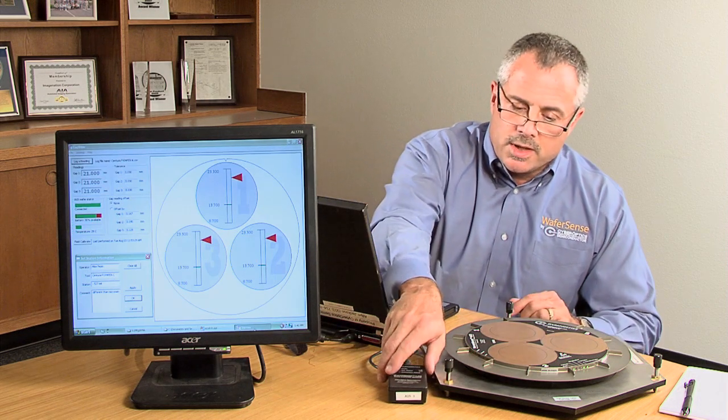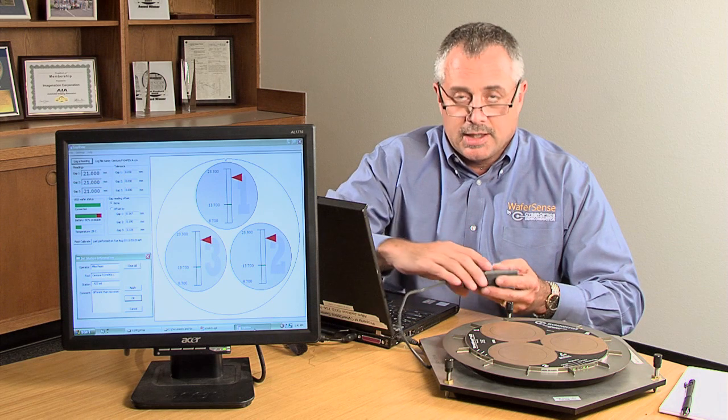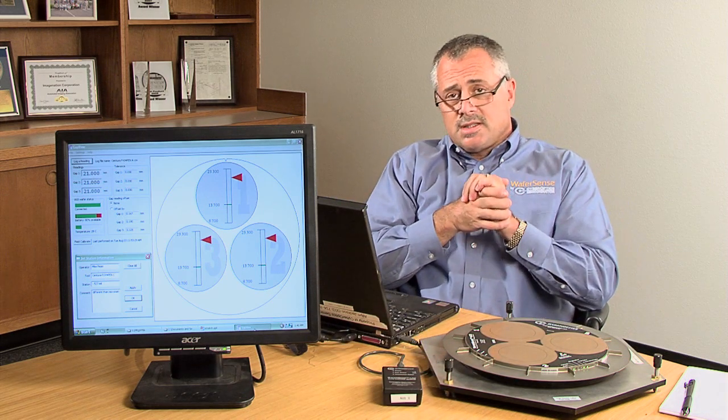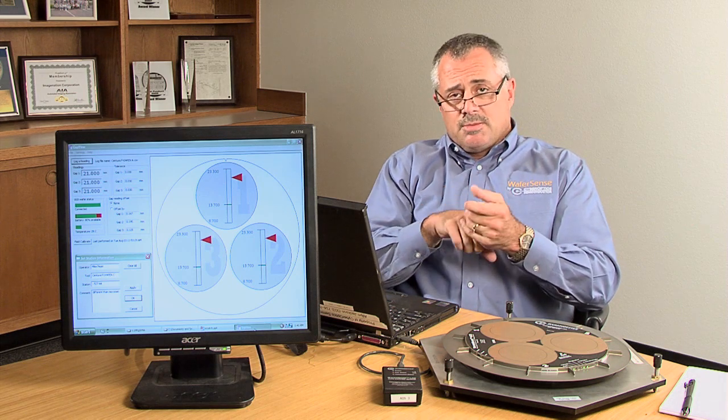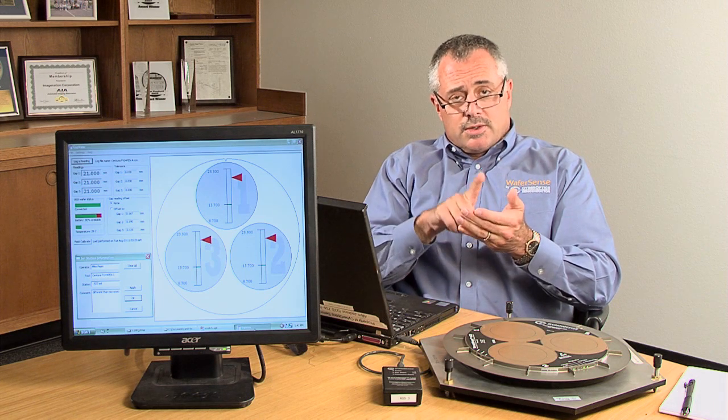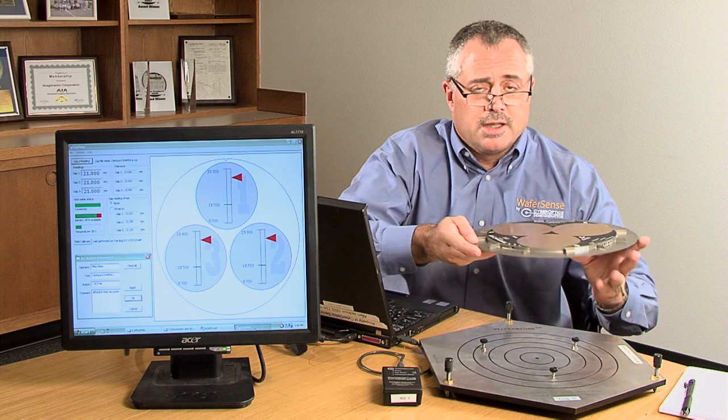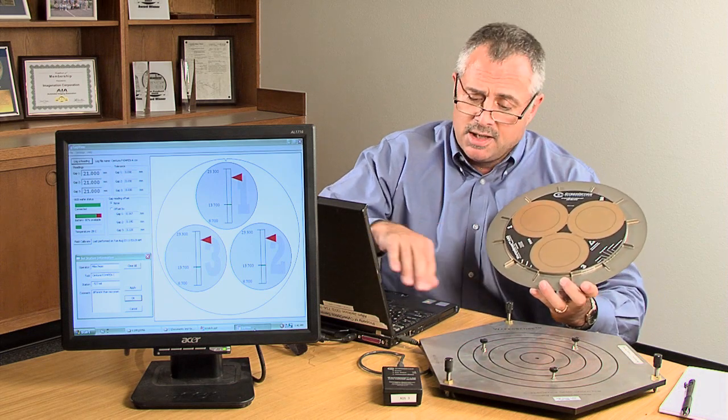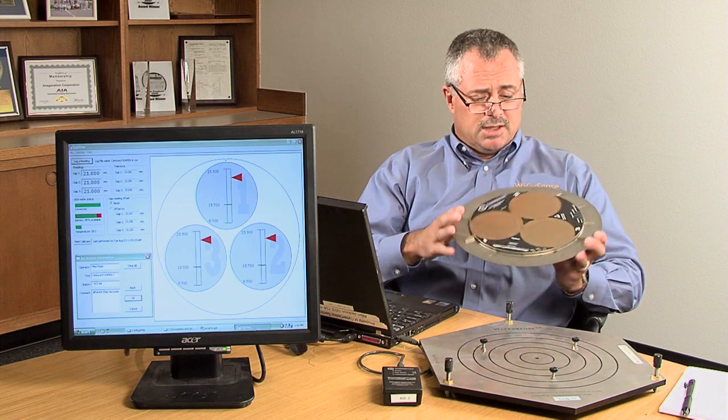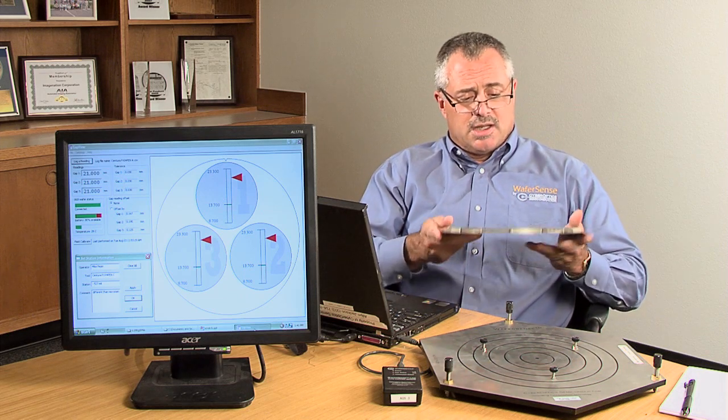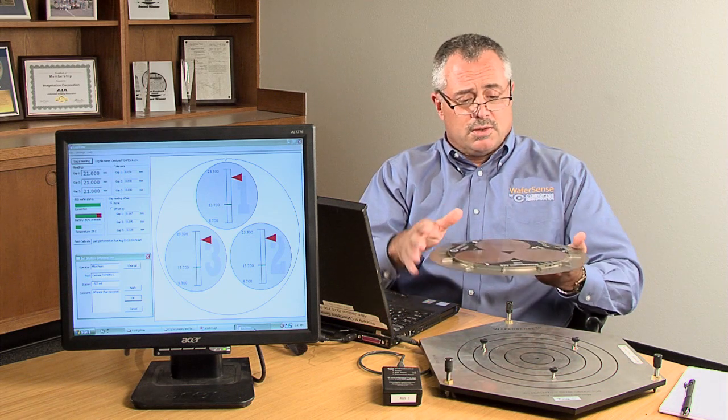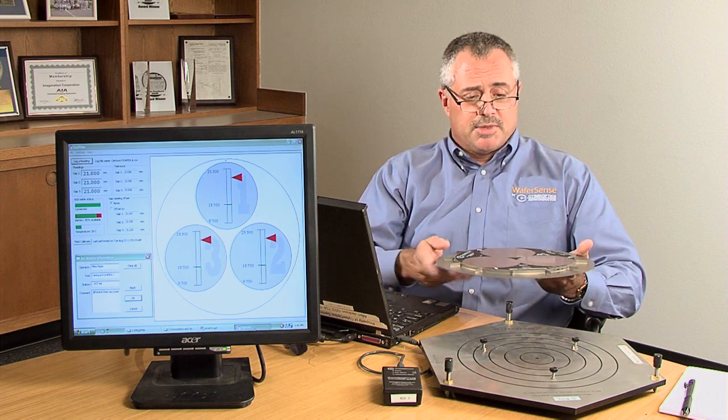The way you start up AGS is you plug in a link box into a Windows compatible system that can be either a laptop or the system console that runs anything from Windows 2000 up through Windows 7. You turn on the AGS wafer and establish a one-to-one Bluetooth wireless link communication. And with this wireless communication, the AGS wafer is able to travel inside a tool, a sealed tool, even under vacuum, and transmit out the gapping data.